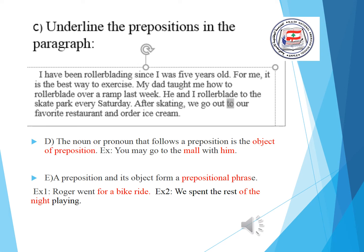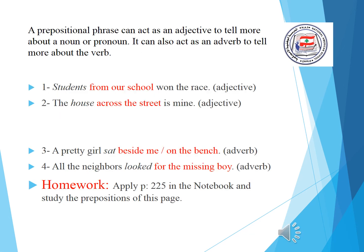A preposition and its object form a prepositional phrase. In example one, 'for a bike ride' is the prepositional phrase and 'of the night' is the prepositional phrase. A prepositional phrase can act as an adjective or as an adverb. It can act as an adjective to tell more about a noun or pronoun, or as an adverb to tell more about the verb.